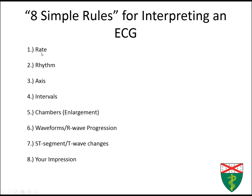I usually start with the rate, the rhythm, the axis, the intervals, chambers looking at enlargement, waveforms and R-wave progression, then the ST segment and T-wave changes, and then the eighth rule is to look at the ECG as a whole and to come up with your own impression.